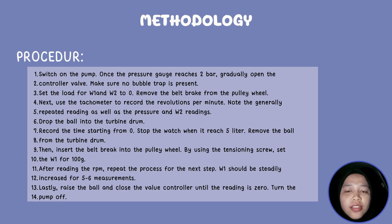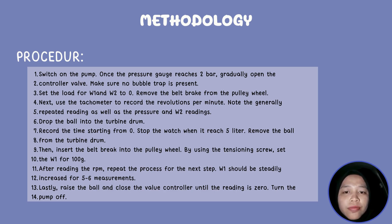Increase for 5 into the 6th measurement. Lastly, raise the ball and close the valve of the controller until the reading is zero. Turn the pump off.